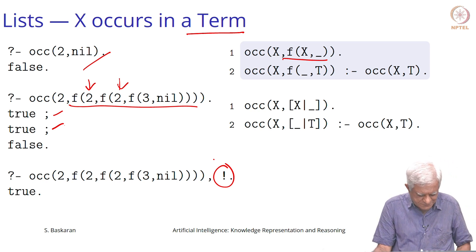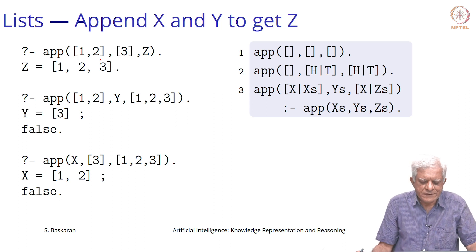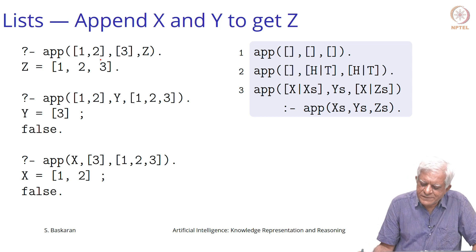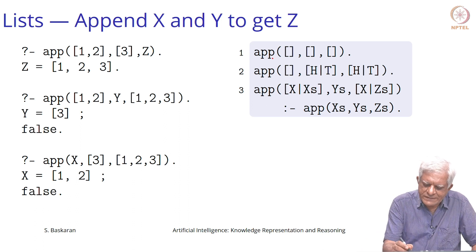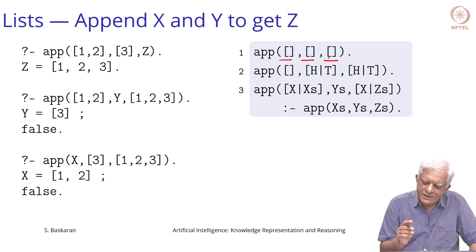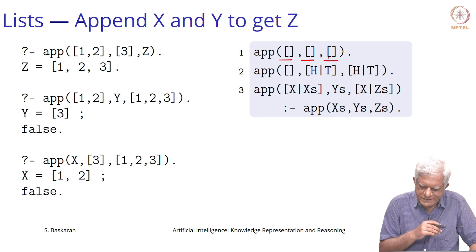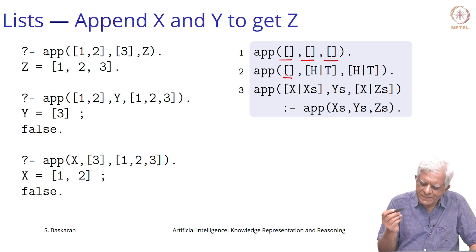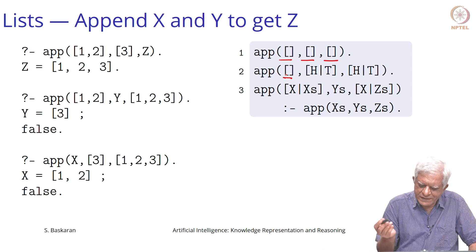We will look at cut. We have already seen the definition of append, so let us revise that again. The first clause says that an empty list appended to an empty list gives you an empty list — remember that the third argument to the predicate is the appended list. The second clause says that if you take an empty list and append it to a list containing head and tail, then you get the same list containing the head and tail.